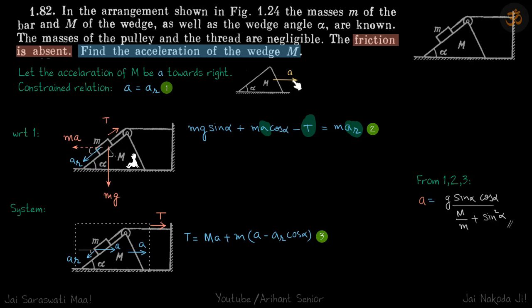Let's assume this acceleration is a. Now by constraint relation, we can see that if it moves by amount a towards right, this string will be loosened by amount a, so it will fall down by amount a. So acceleration of small m relative to capital M is going to be a. In this case, ar equals a. That is the relation between the two accelerations, and let's call that our equation one.